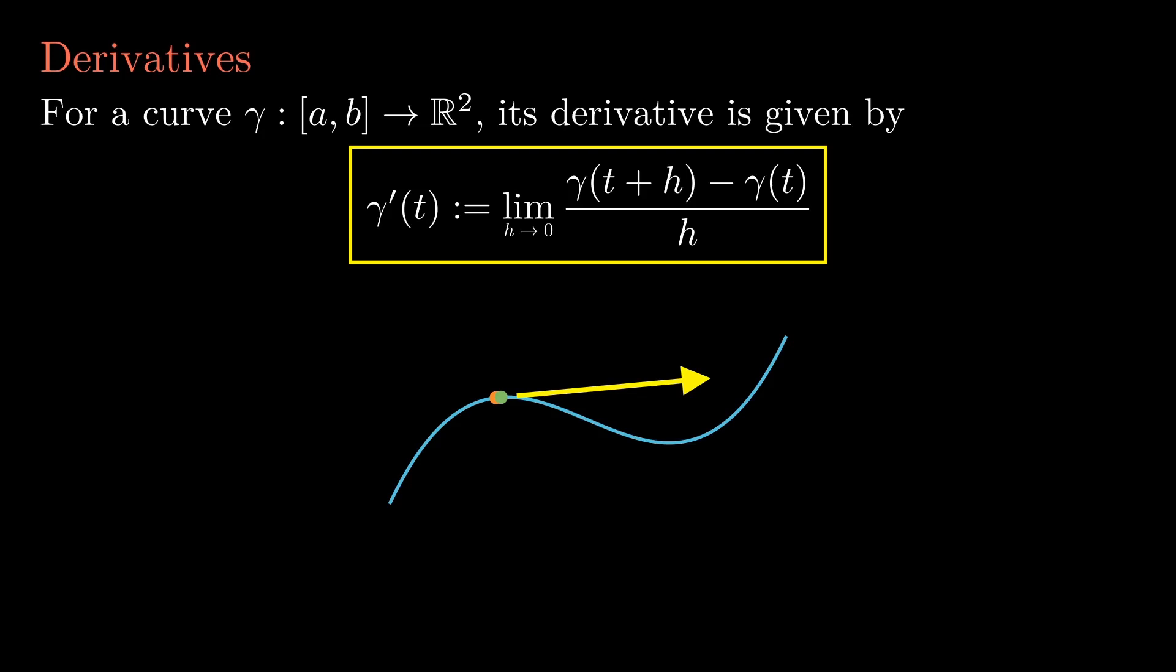The length of this arrow is proportional to how fast such particle is moving at time t. This is why we call this derivative the velocity of the trajectory gamma.